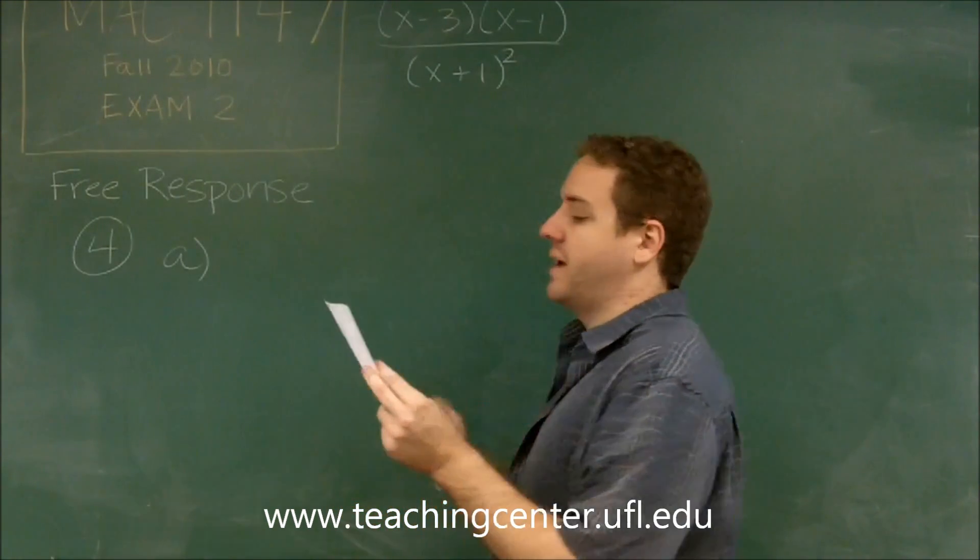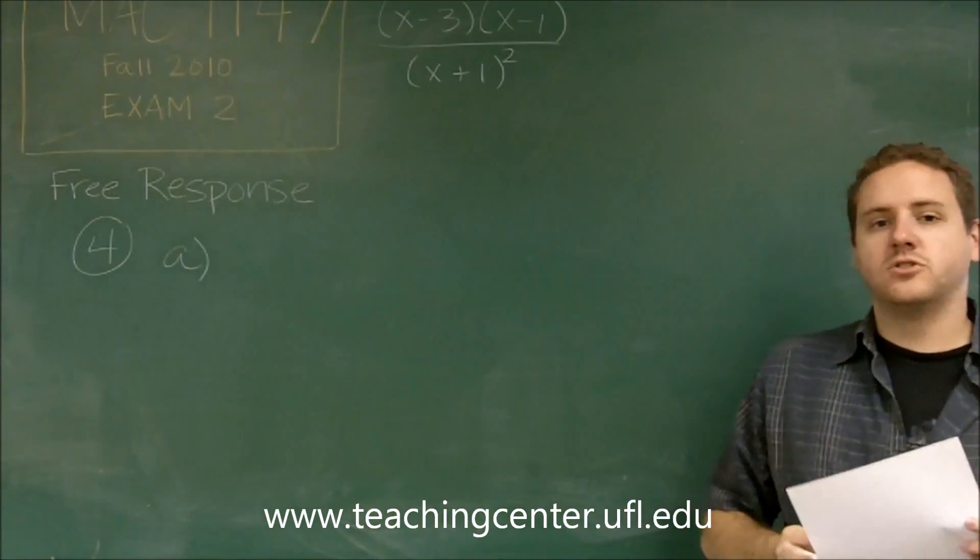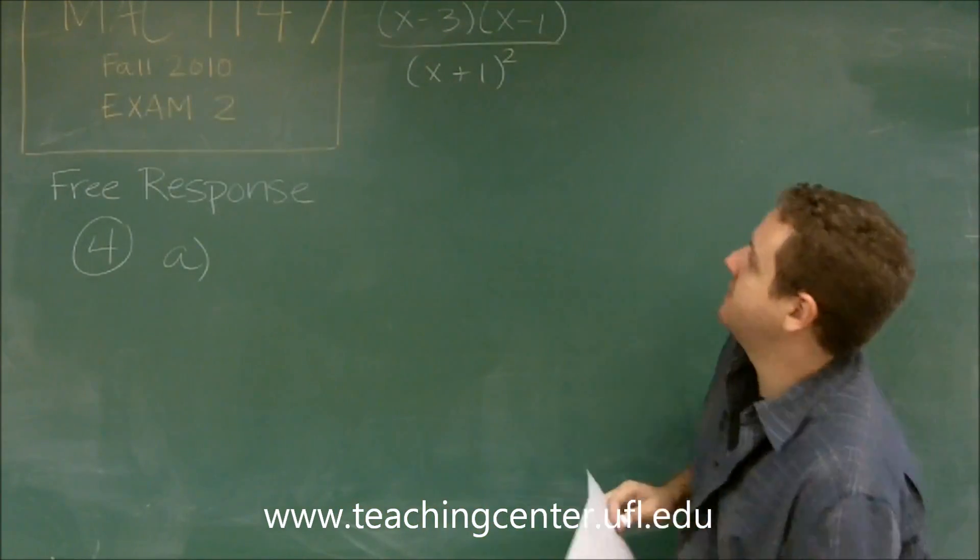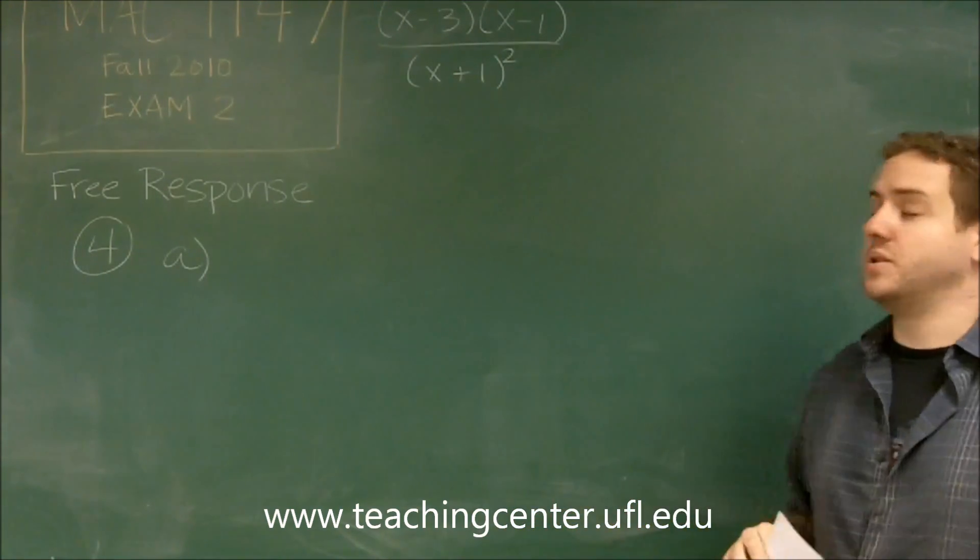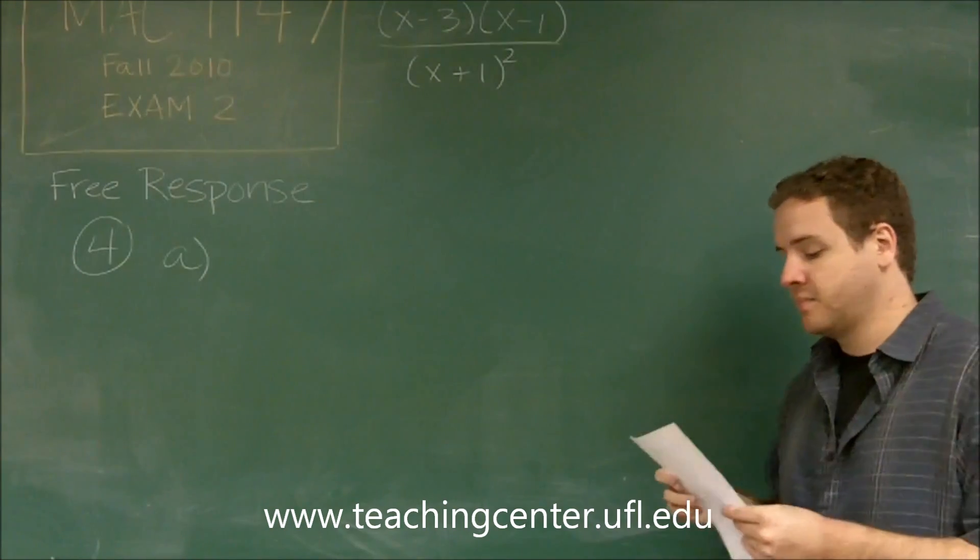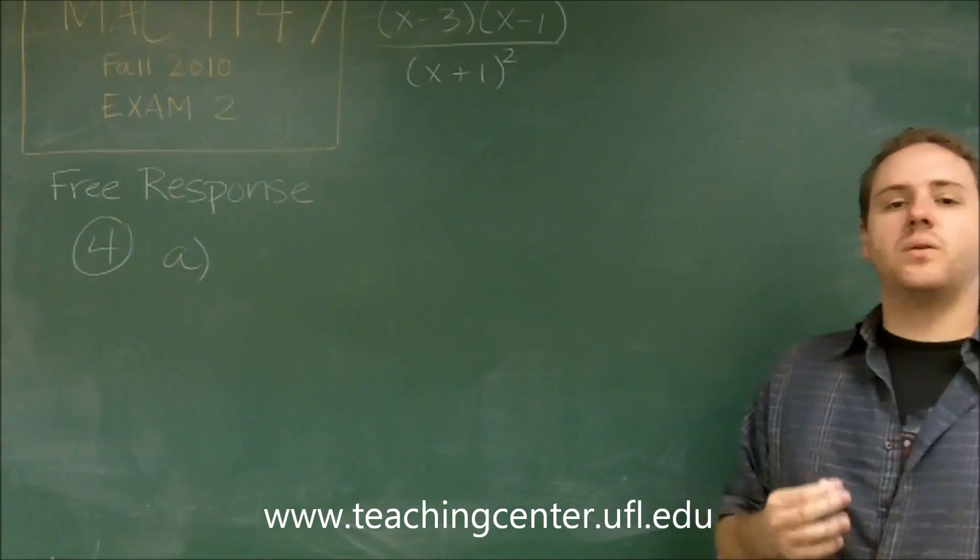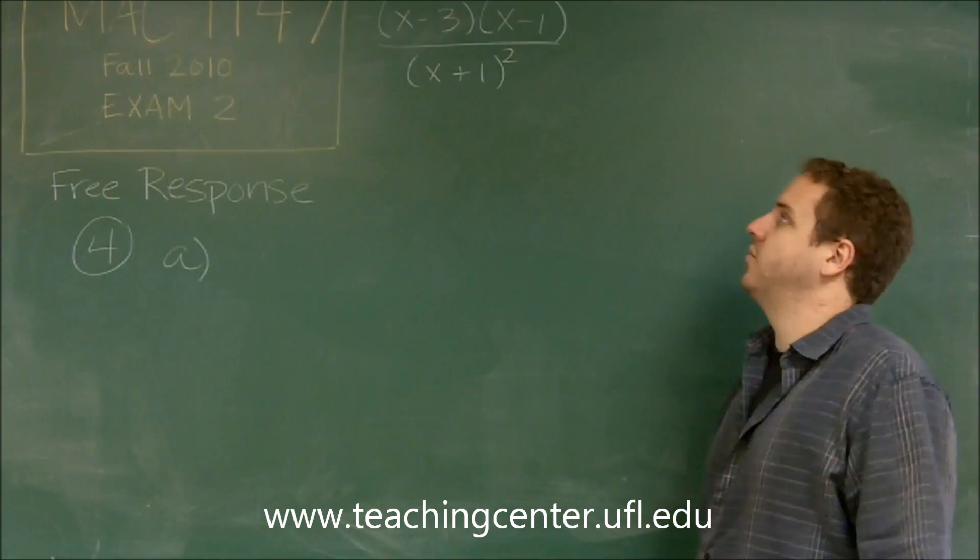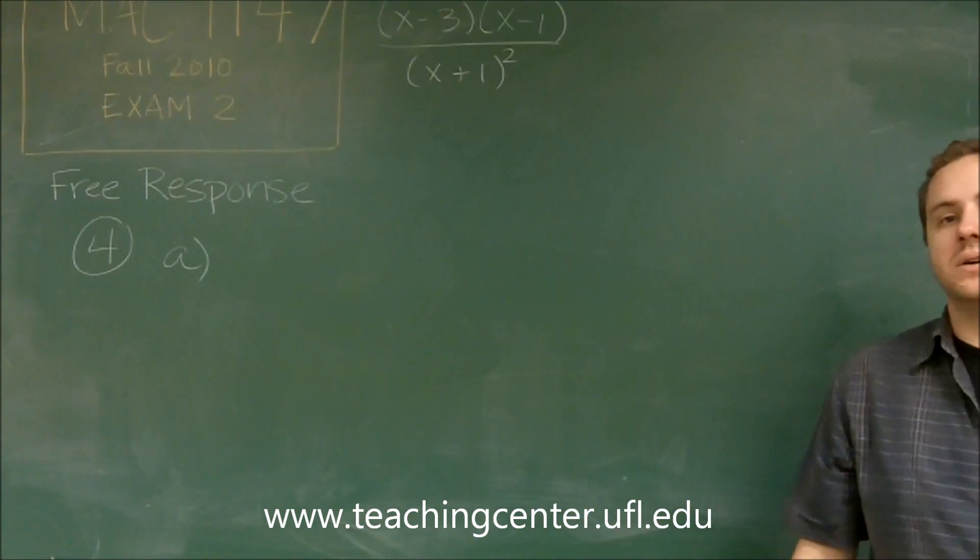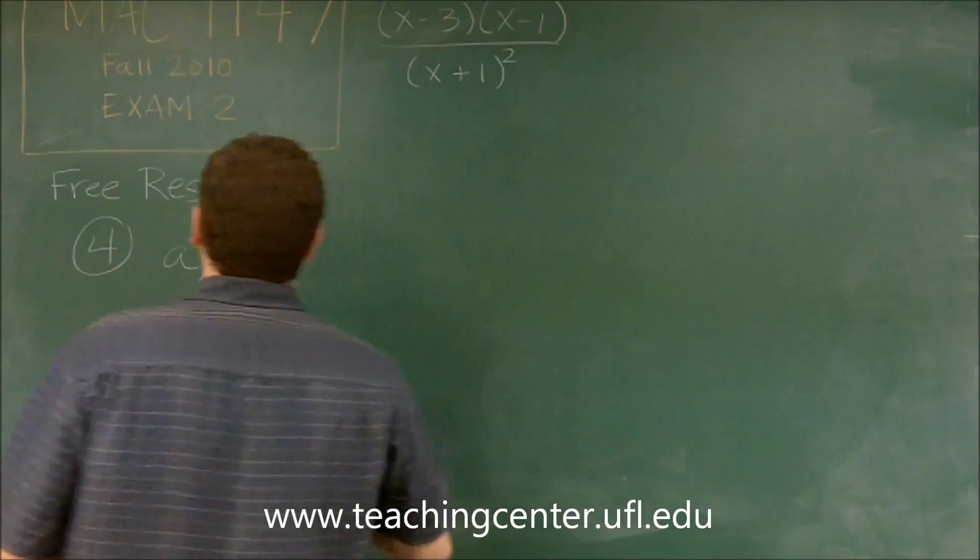We have nothing that cancels out in this graph. Remember that on a rational function like this, if something did cancel out, that would indicate there's a hole on the graph, so we don't have any in this function. The domain of F is everything we're allowed to plug in. The only thing we're not allowed to plug in is negative 1, because that would make our denominator zero.